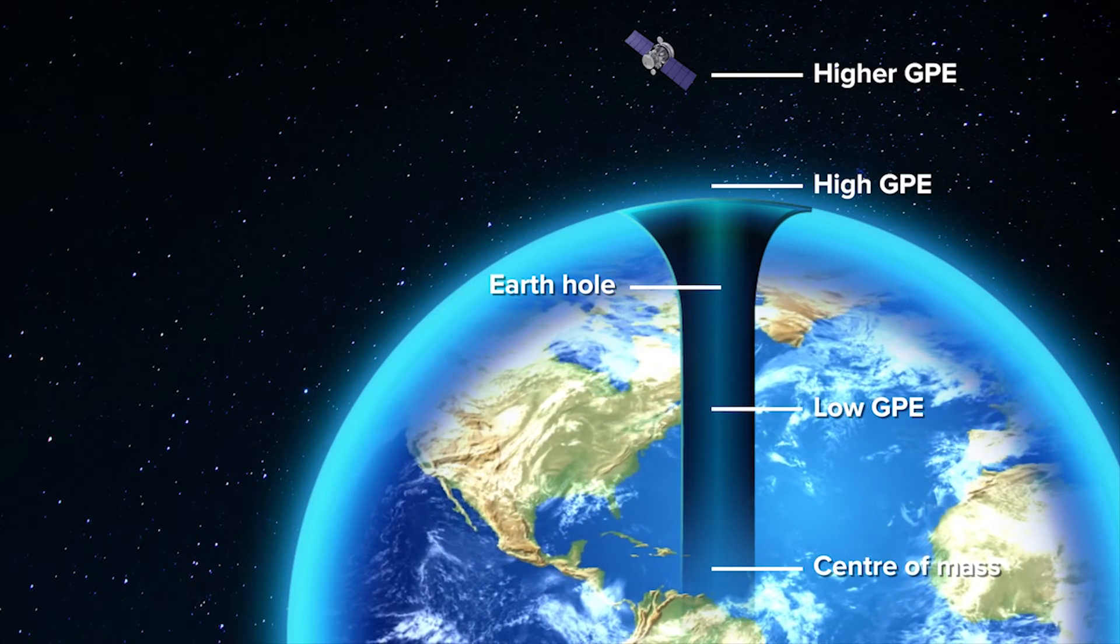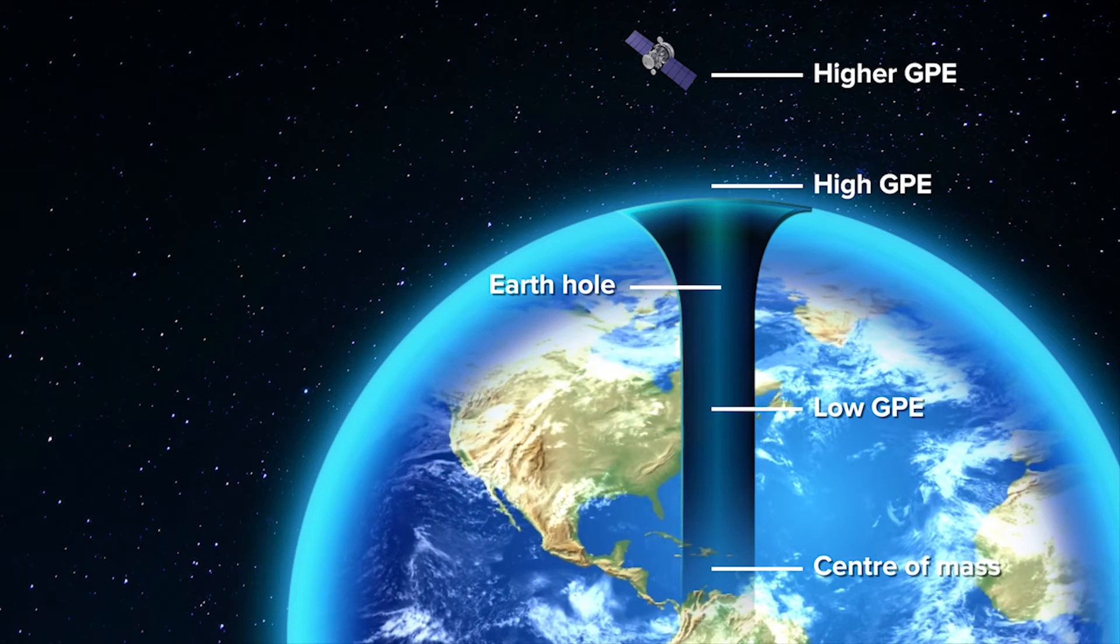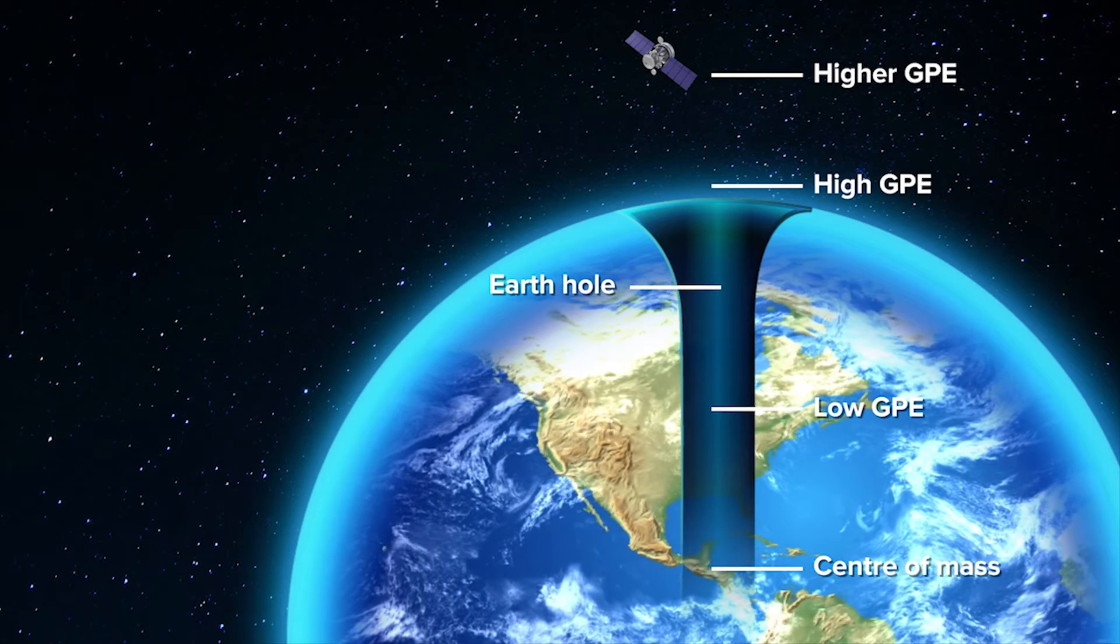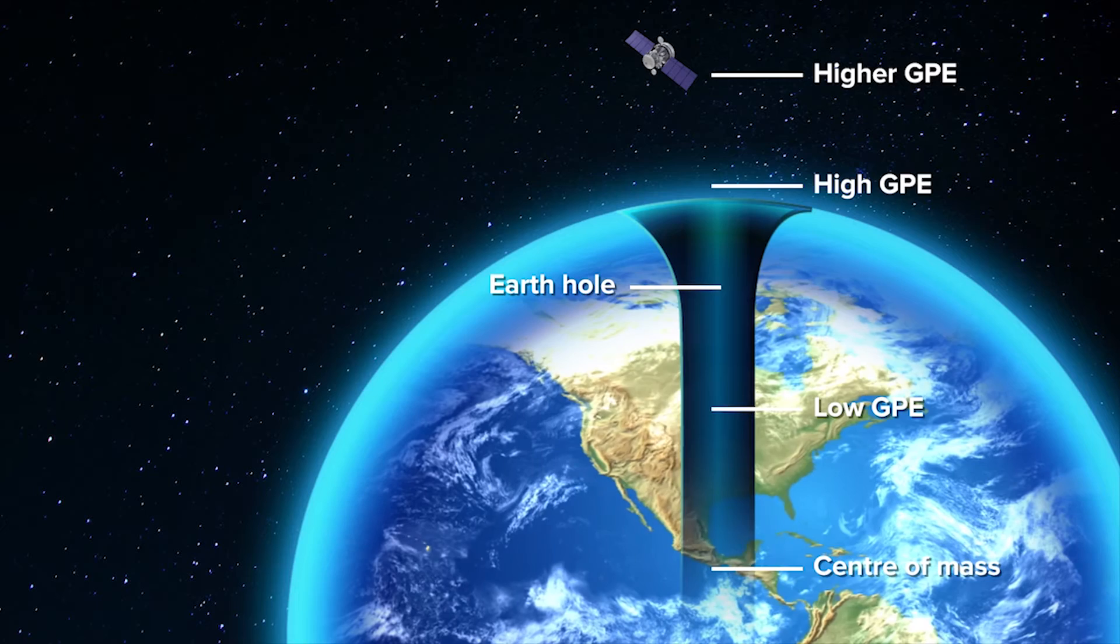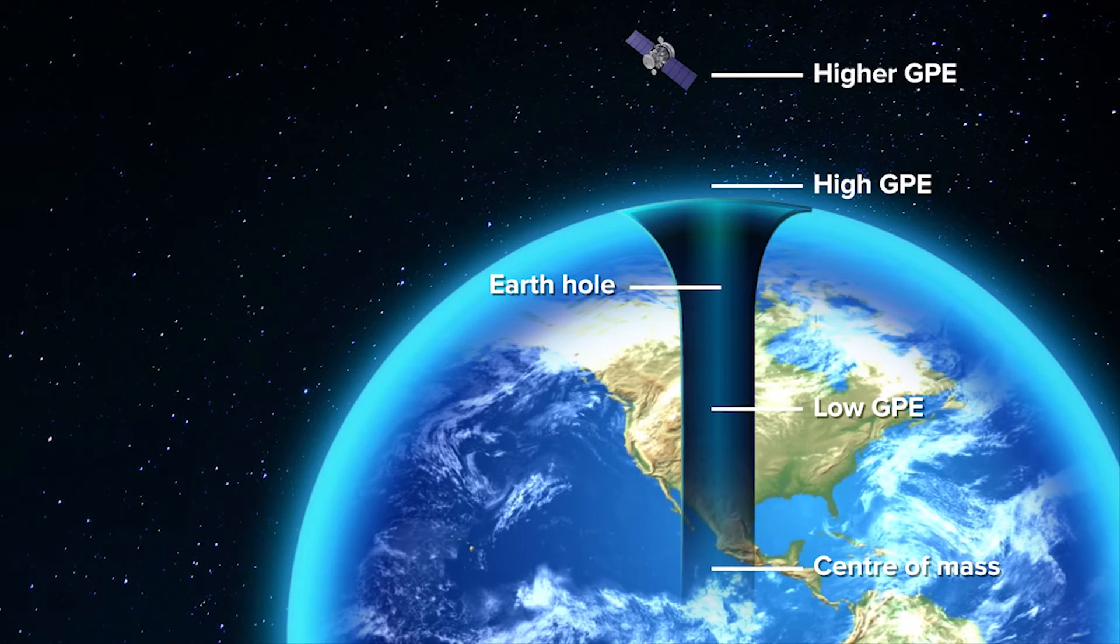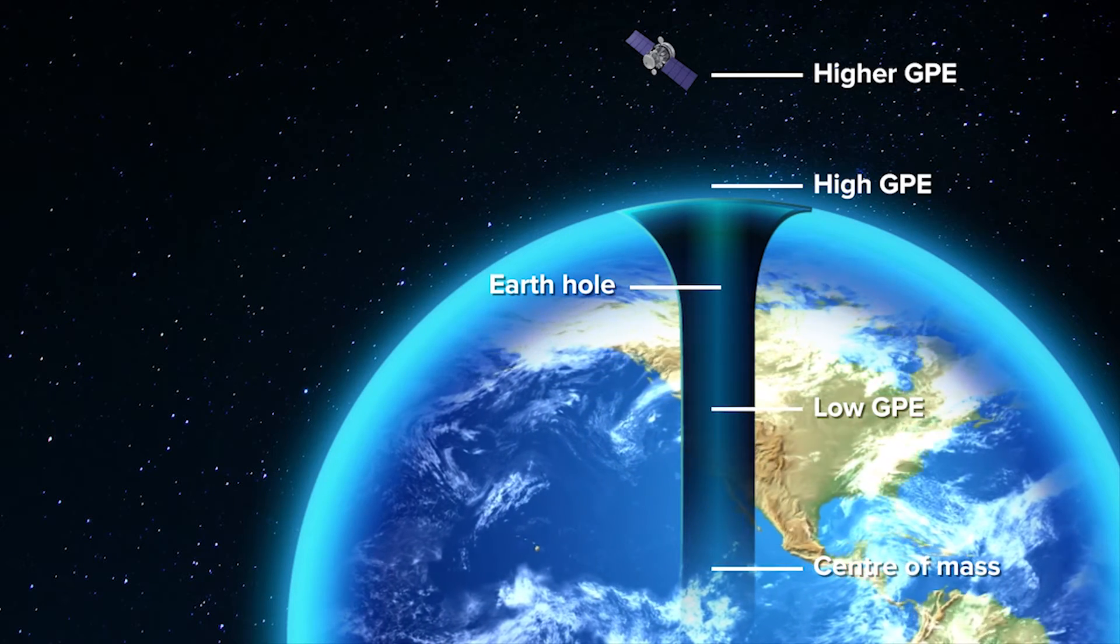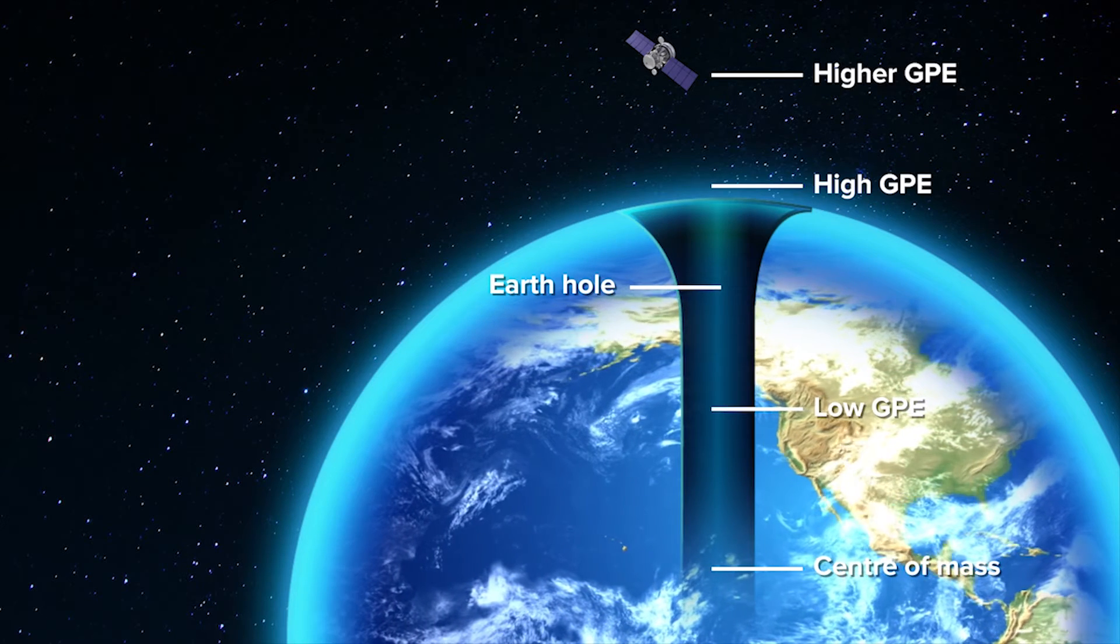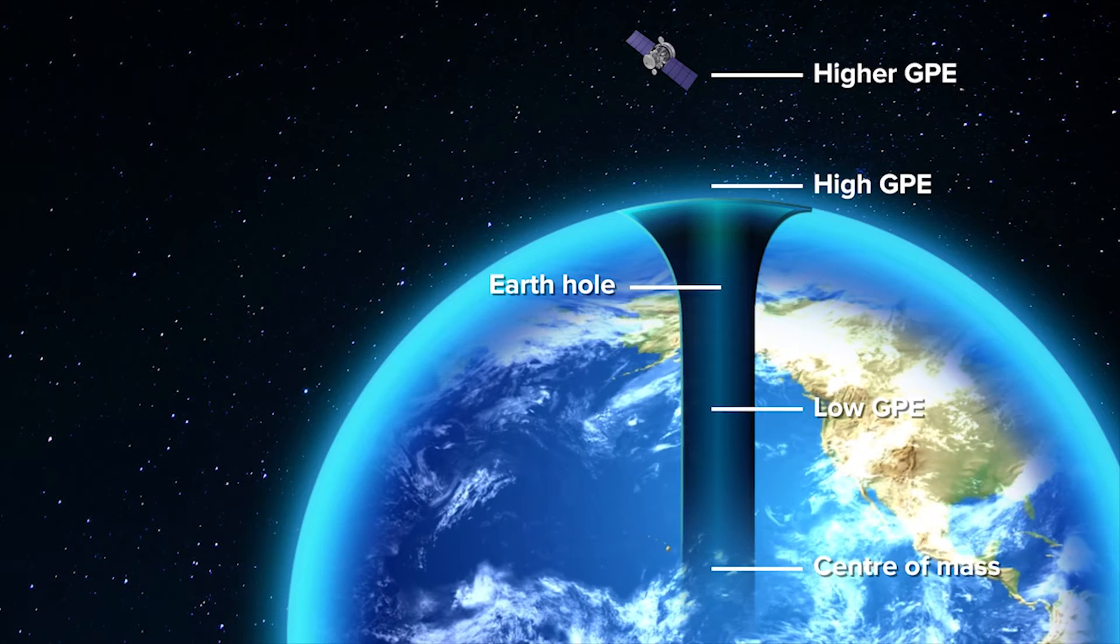If the satellite is to be lifted into orbit, work has to be done on it. In this case, a rocket may provide the energy or thrust for the satellite to get into orbit. The law of conservation of energy dictates that energy cannot be created or destroyed, only transformed.